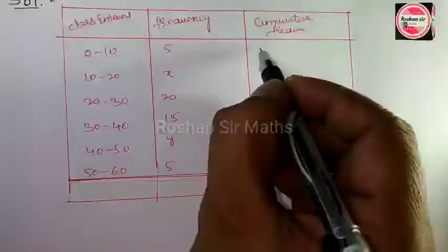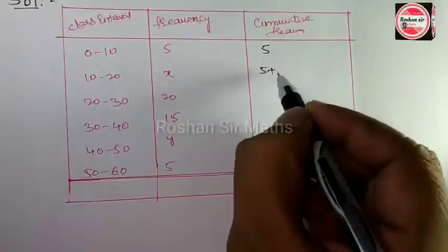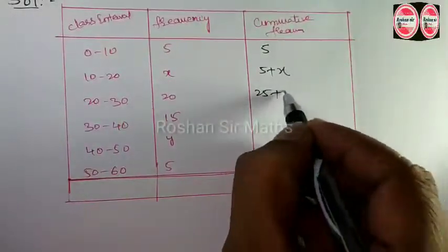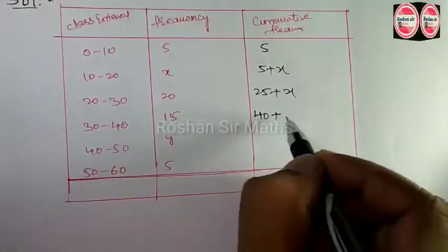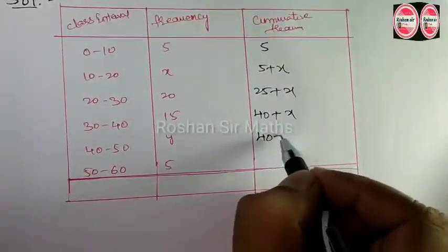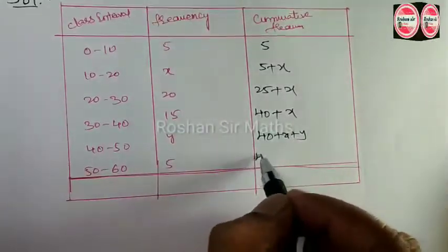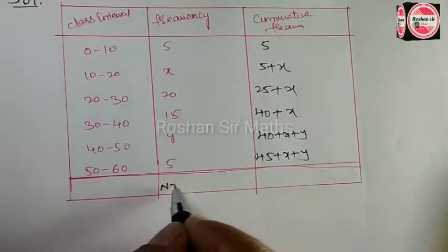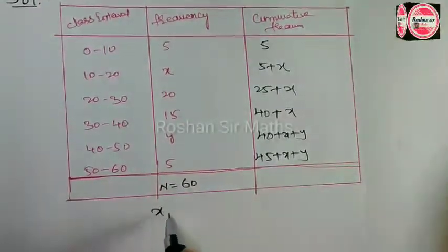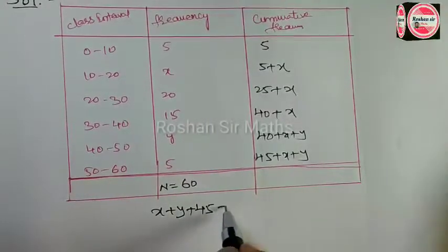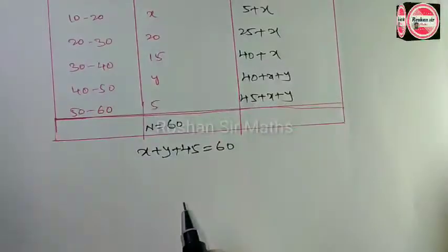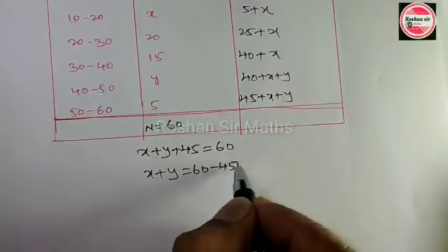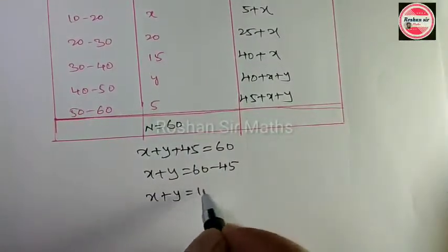For cumulative frequency, we add: 5, then 5 plus x, then 25 plus x, then 40 plus x, then 40 plus x plus y, then 45 plus x plus y, giving us 60. So x plus y is equal to 15.